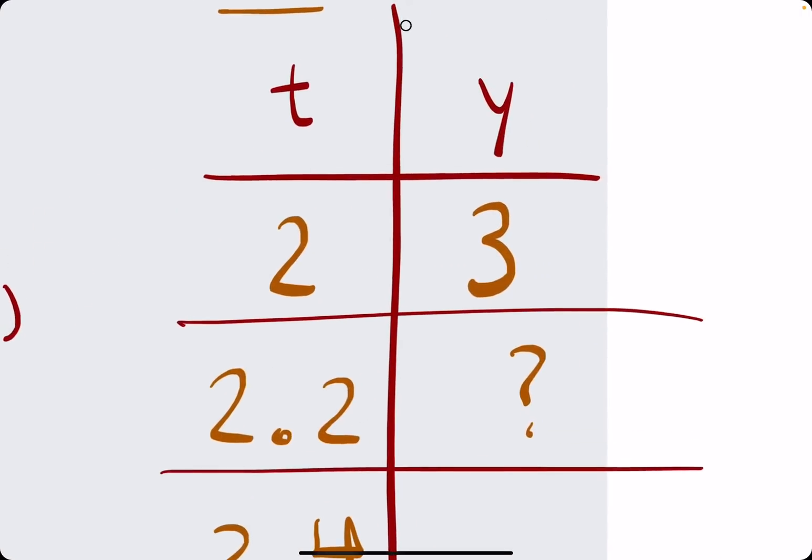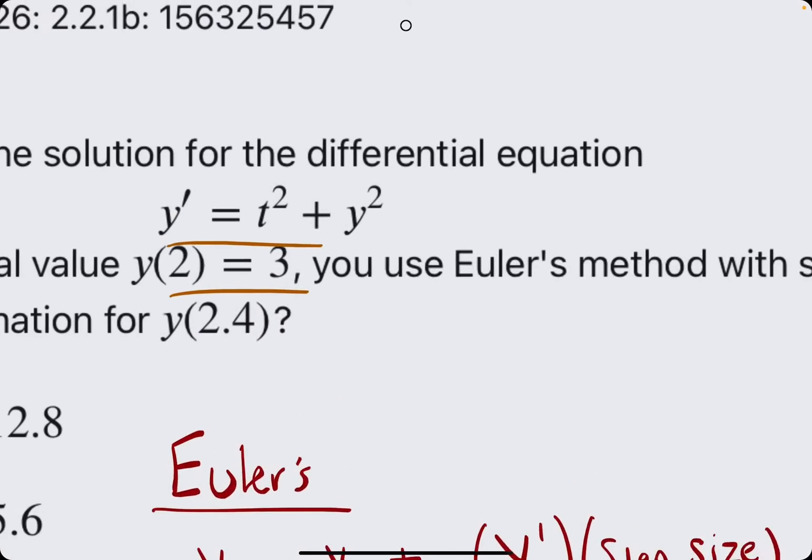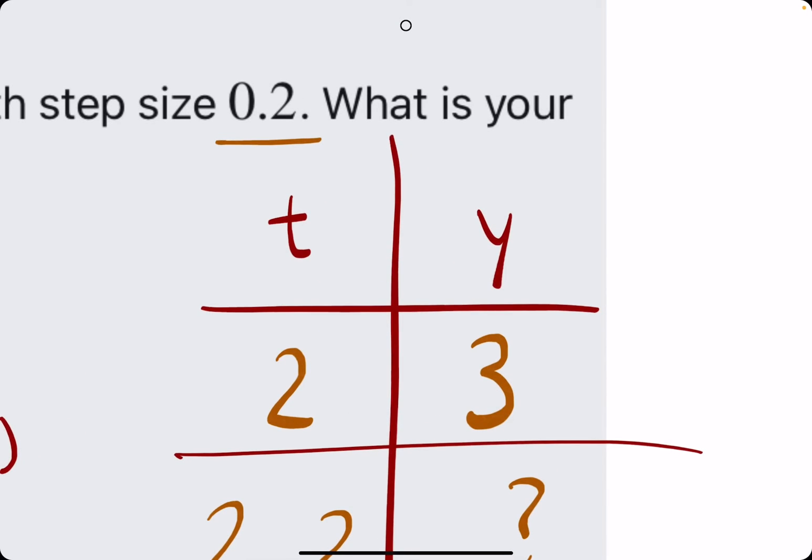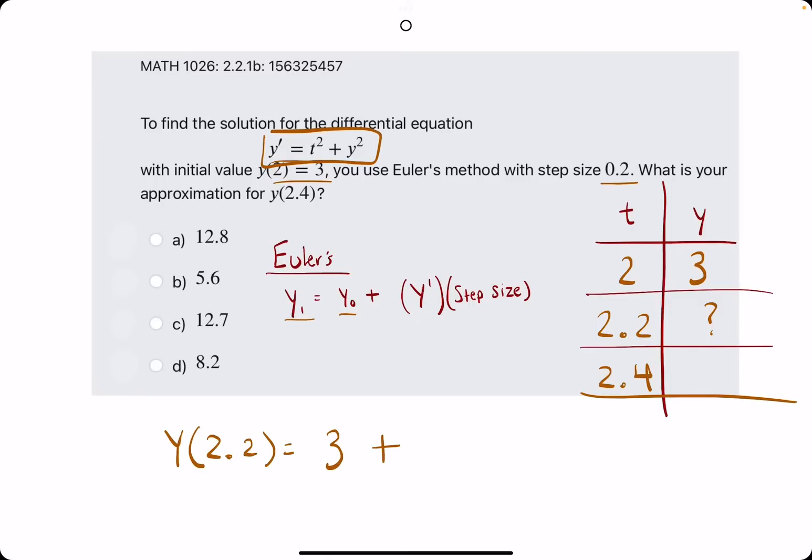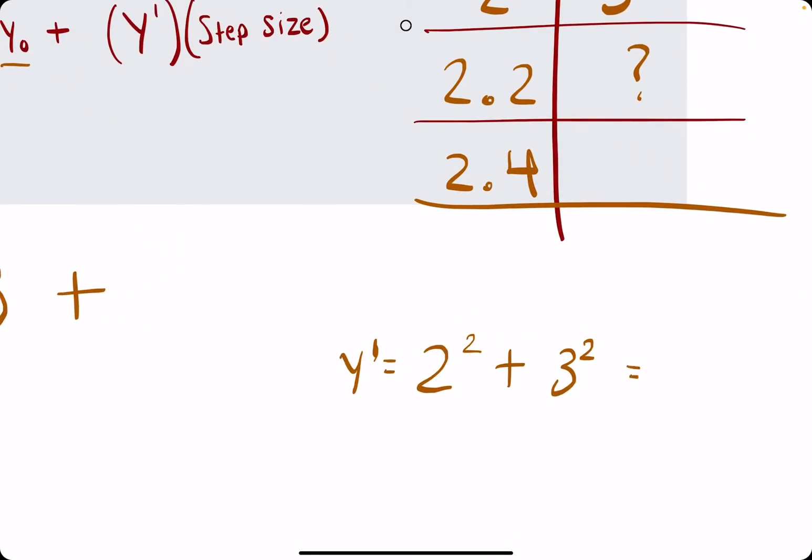So 3 was the previous y value, plus y prime. So we need to find the y prime that corresponds to these t and y values, so 2 and 3. So 2 squared plus 3 squared. Not too bad. So just calculating this off to the side gives us 4 plus 9, which is 13.